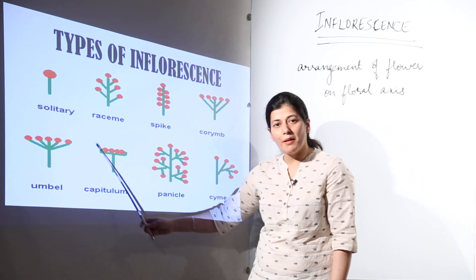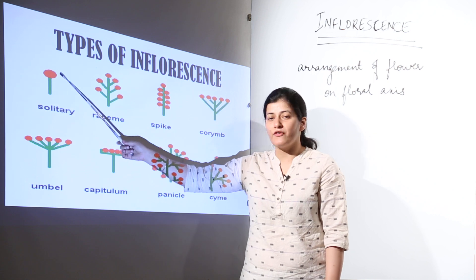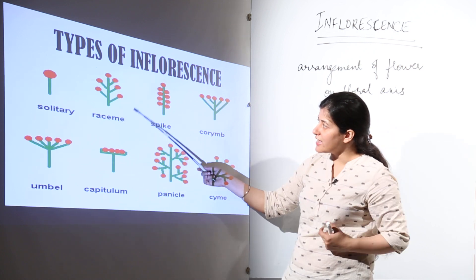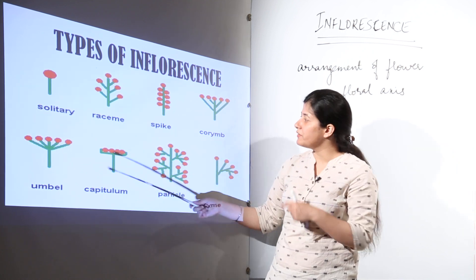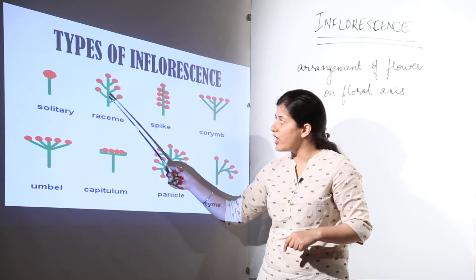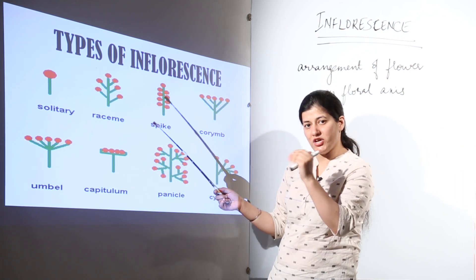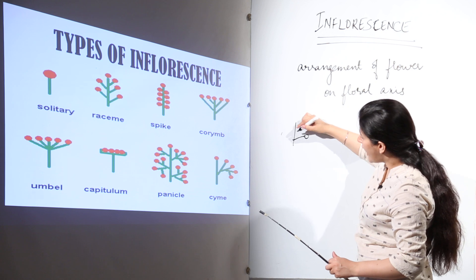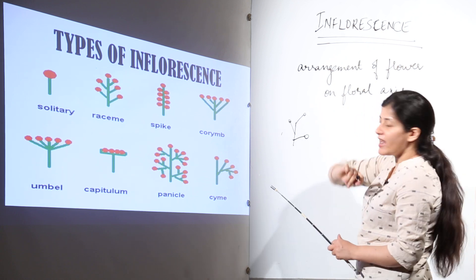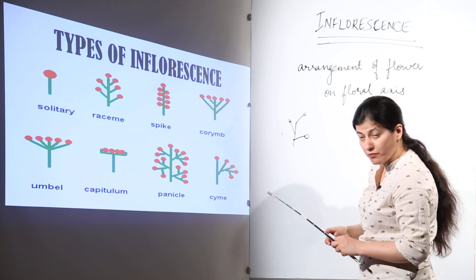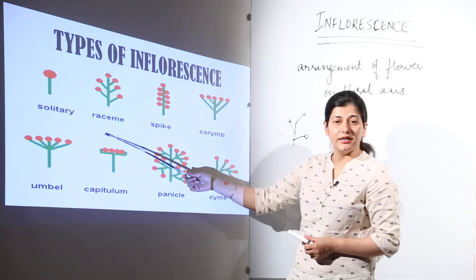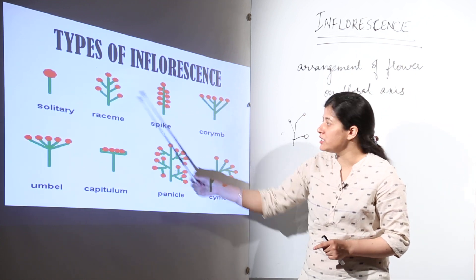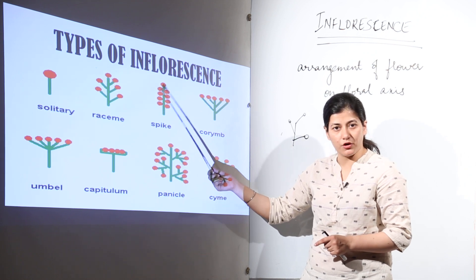The various types of inflorescence are not explained in detail because the pictures are quite descriptive. You just have to remember the names. The first one is solitary — if you find a single flower on the floral axis, that is solitary inflorescence. Then we have raceme, also known as racimose — flowers are present but not at the same point; each flower originates from the next bud, the next point where meristem is present. Then we have spike arrangement.